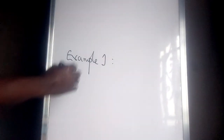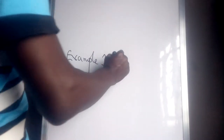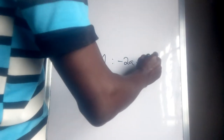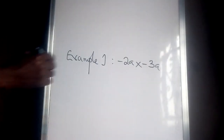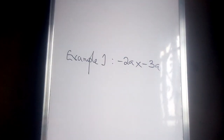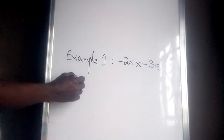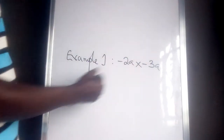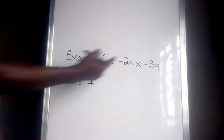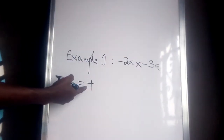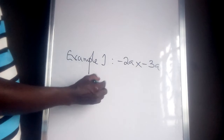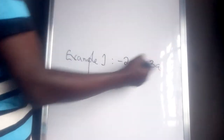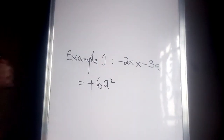Example one: find minus 2a multiplied by minus 3a. From what we have just learned, whenever you multiply a minus sign by a minus sign you get a plus sign. So minus times minus is plus, then two times three is six, and a times a is a squared. The answer is positive 6a squared.